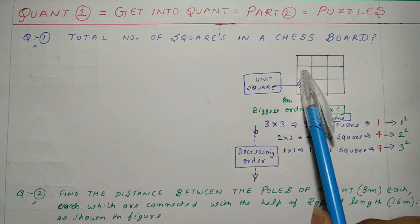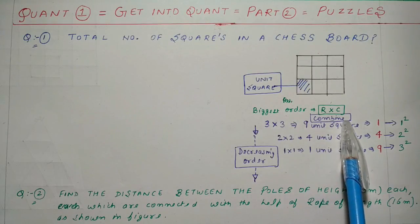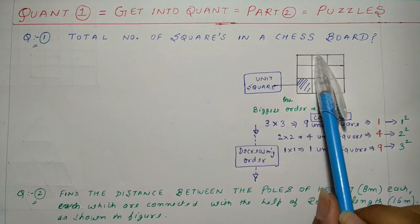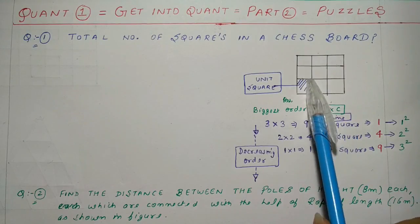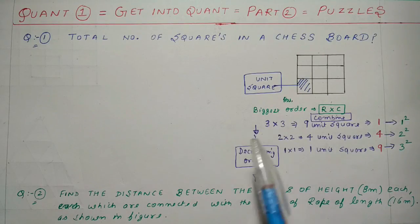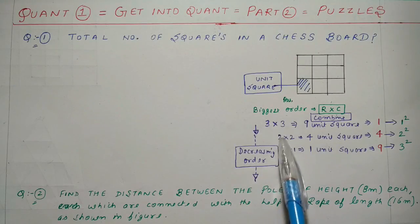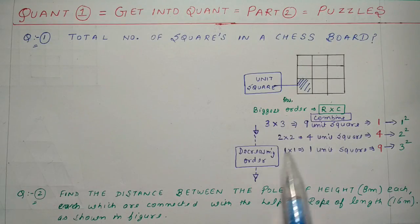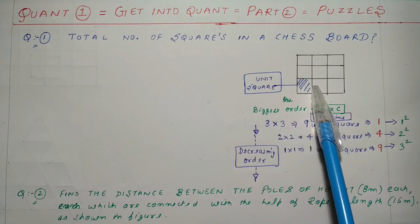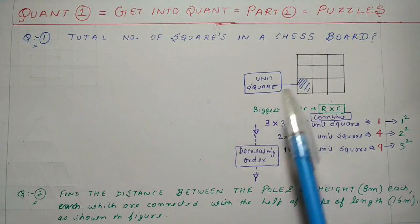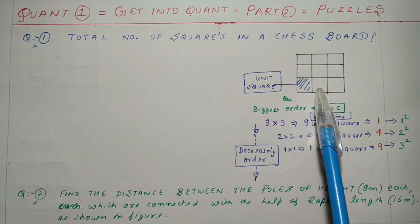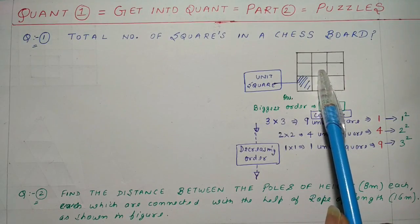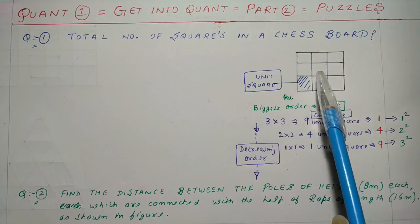In 9 unit squares ko combine karke kitne squares ban rahe hain? Ek baat — 9 sabko mila du toh yeh sabse bada square ek square ban jayega, toh maine yahan ek likh diya. Uske baad biggest order nikalne ke baad order decrease karte hain. 3x3 ke baad order decrease karenge toh 2x2. 2x2 ke andar 4 unit squares hain. Agar 4 unit squares ko milayein toh 4 alag 2x2 squares ban sakte hain — 1, 2, 3, 4 squares.